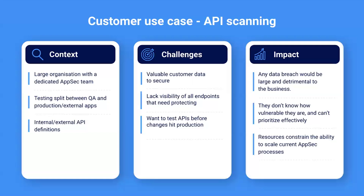As we alluded to on the previous slide, those numbers are growing. The challenges they were seeing were, of course, the overarching goal of protecting data and web applications. There was a theme of lacking visibility of all the endpoints and all the definitions out there across lots of different teams and verticals. They were also moving towards wanting to test APIs before changes hit production — not just testing externally facing web applications. And the potential impact included worst-case scenarios like a data breach, and just not knowing how vulnerable they are or how to prioritize their activities.